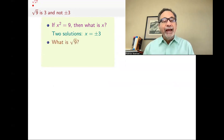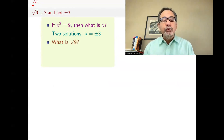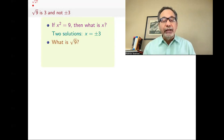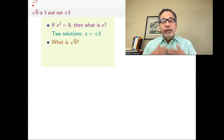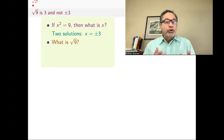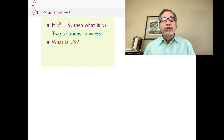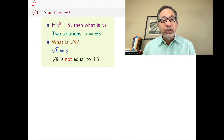On the other hand, someone might ask you what's square root of 9. On the face of it, you might think these two questions are the same — asking what the solutions to x squared equals 9 are, and what is square root of 9, because square root of 9 means a number that if you multiply by itself you get 9. However, square root of 9 is defined to be just 3, the positive one, and not plus or minus 3.